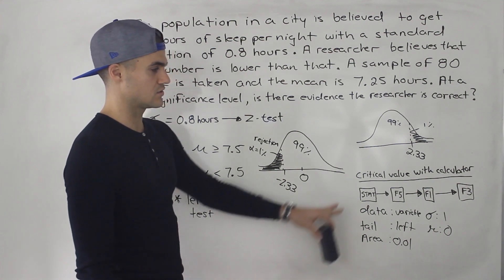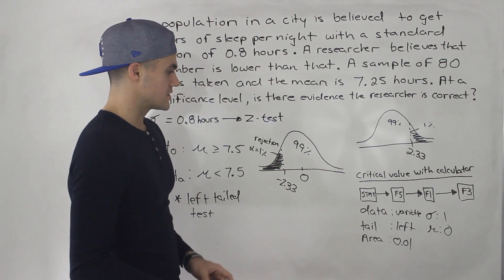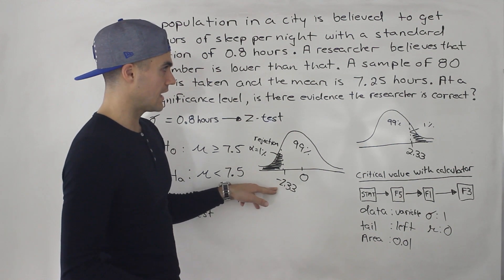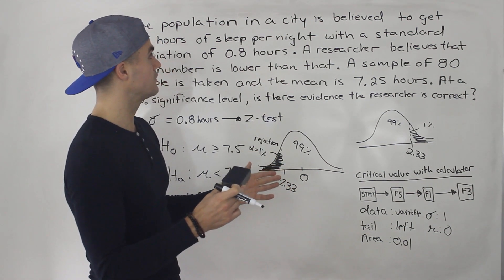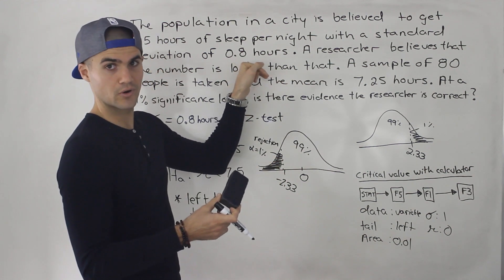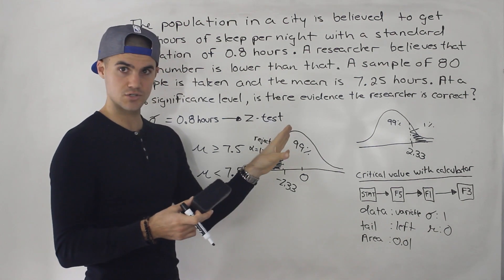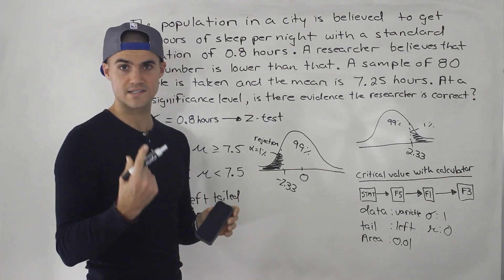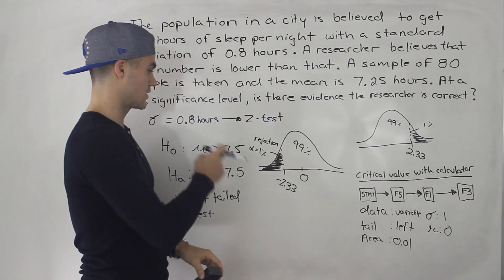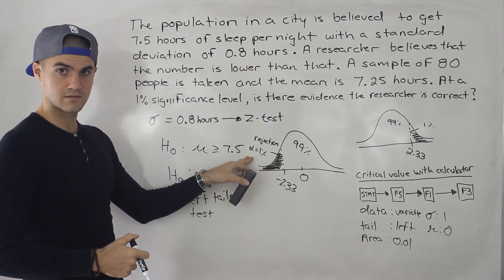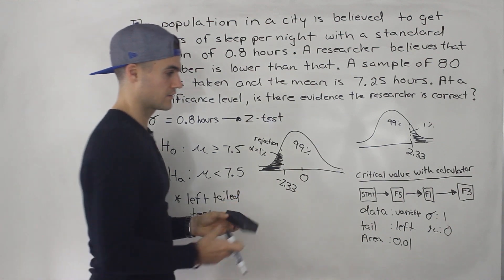Notice that getting this critical value has nothing to do with the number of hours of sleep in this scenario — we didn't use the 7.25 or the 0.8 for computing it. The only thing we used the 0.8 for is to know we're dealing with a Z distribution rather than a T distribution. The critical value only depends on whether the standard deviation is known and on the significance level. So critical value: negative 2.33.